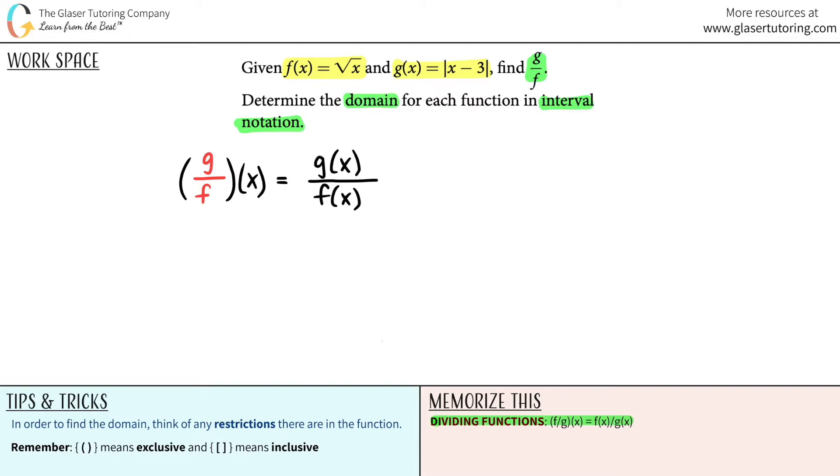Well the g of x function was the function that they stated second. g of x was just the absolute value of x minus 3. So that's perfect for the g of x. And then what was the f of x function? Well the f of x function that they said over here was the square root of x. So square root of x.